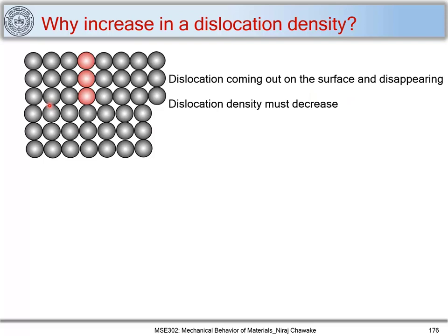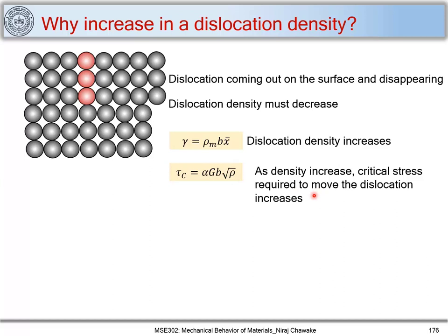When I increase plastic strain there is an increase in dislocation density, and we have seen the relation that when dislocation density increases, shear stress also increases — that is strain hardening. So one argument says dislocation density must decrease during plastic deformation, yet practically we observe strain hardening and increasing dislocation density, which supports that dislocation density does increase with continuous plastic deformation.